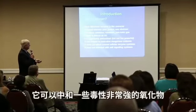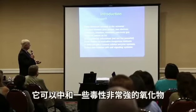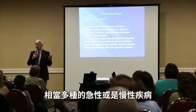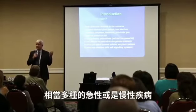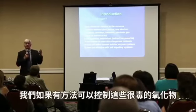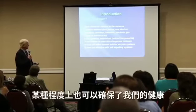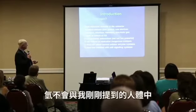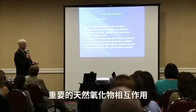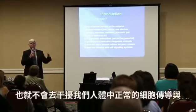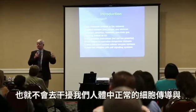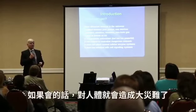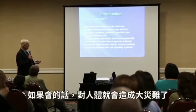Hydrogen can neutralize or reduce very dangerous oxidants in our cells. These dangerous oxidants account for a number of different problems, particularly in chronic illnesses — we have an excess of these produced in both acute and chronic illnesses. Importantly, hydrogen does not interfere with the signaling systems within the cell. There are minor oxidants important in signaling and controlling gene regulation, and we don't want to interfere with those because that can cause catastrophic effects.